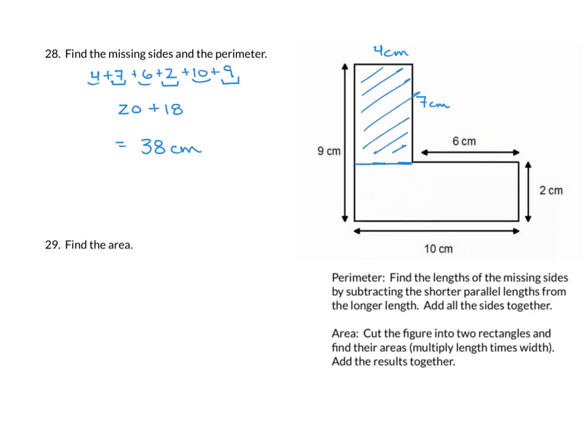How do we find the area of the top rectangle? We're going to multiply the length times the width, so we get 4 times 7. For my bottom rectangle, we're going to multiply the dimensions of that, we have 10 by 2.